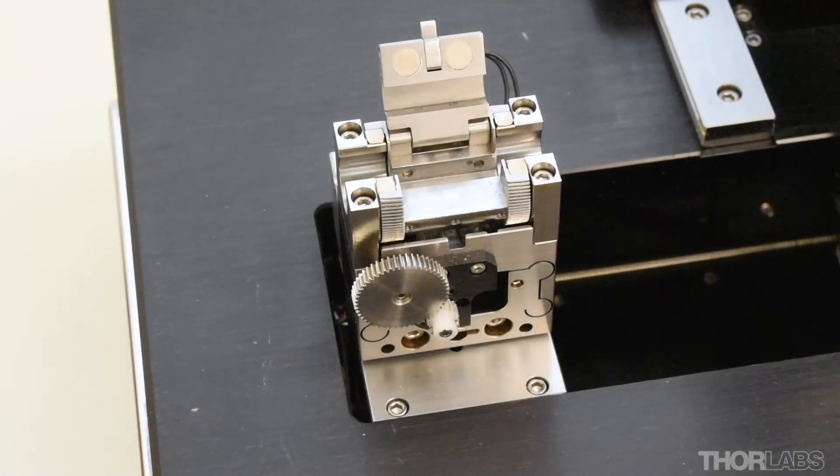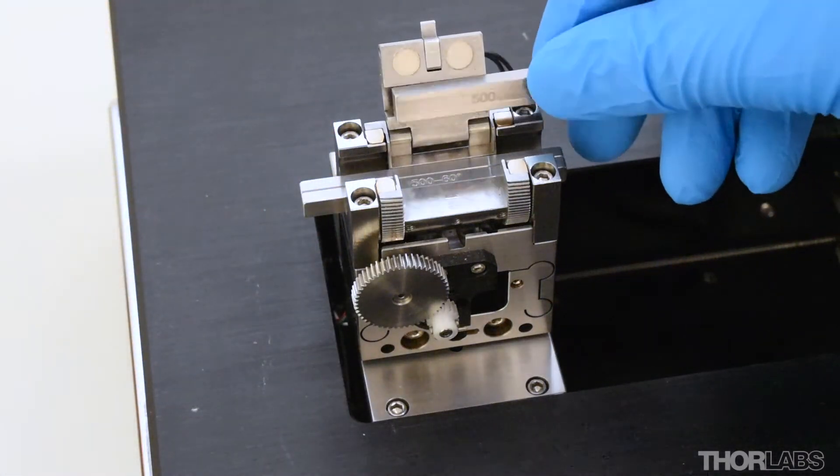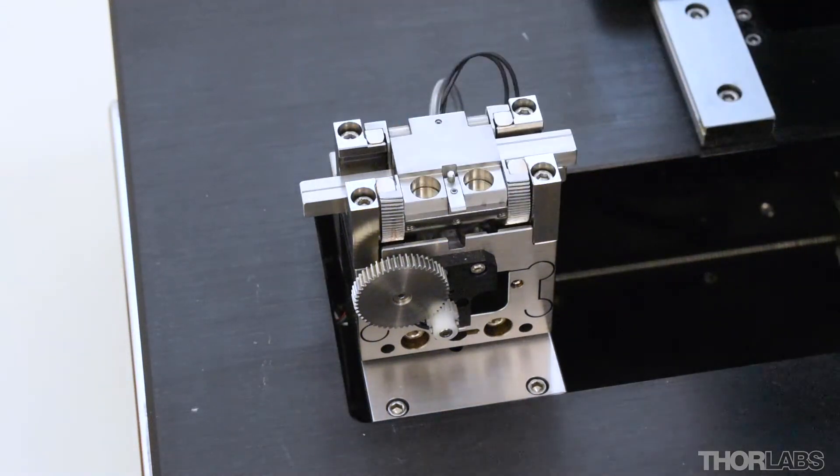Place the bottom insert in the channel of the fiber holding block. Place the top insert partway into the channel of the lid. Close the lid while holding onto the insert to keep it in place.